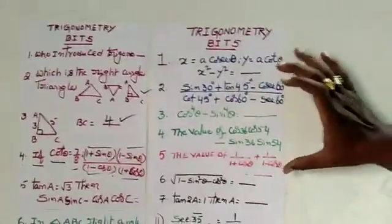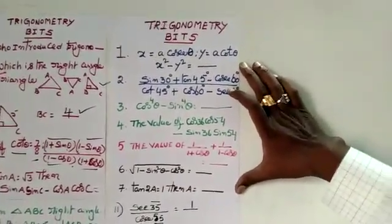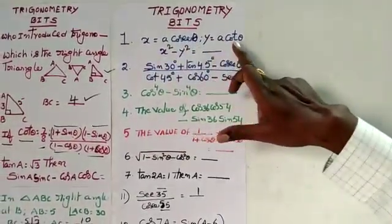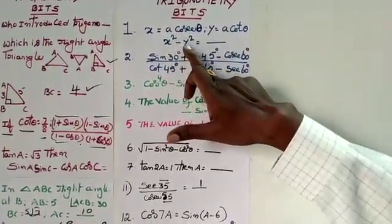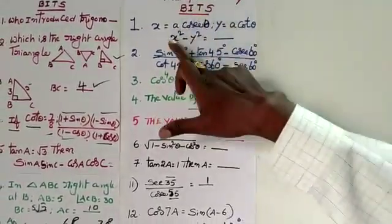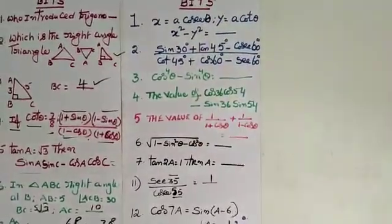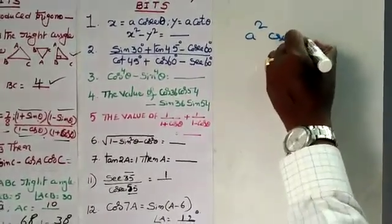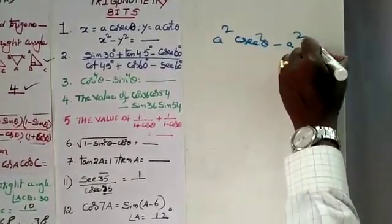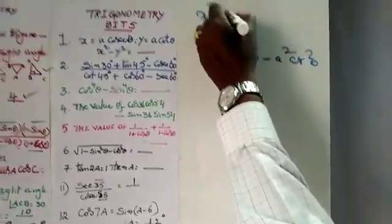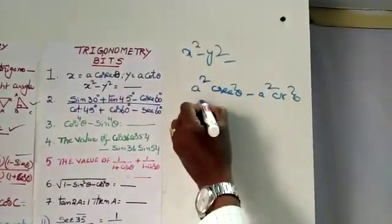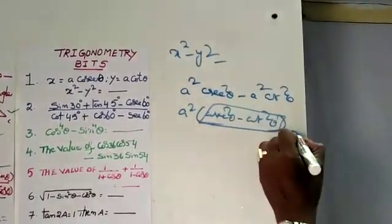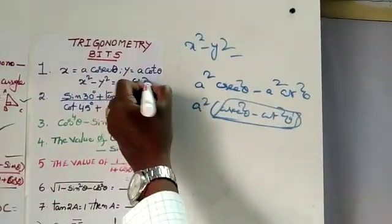Trigonometry bits 5 to 7 bits. X is equal to A cos theta, Y is equal to A cot theta. So x squared minus y squared gives A squared cos squared theta minus A squared cos squared theta, and this value goes to 1. So the answer is A squared.